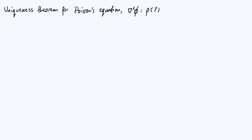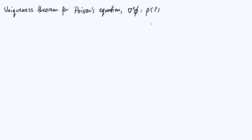Hi everyone. In this video we're going to take a look at the uniqueness theorem for Poisson's equation, and we're going to derive this theorem, which is a really useful result that helps us solve certain kinds of problems in electrostatics and also in Newtonian gravity. I've written out Poisson's equation up at the top here: del squared phi is equal to rho of r, where del squared is the Laplacian operator, phi is the function we're solving for, and rho of r is a source term — a function that depends on position in 3D space. Depending on whether you're looking at electrostatics or Newtonian gravity, you'll also see various physical constants multiplying rho of r, and you might see a minus sign on the right-hand side.